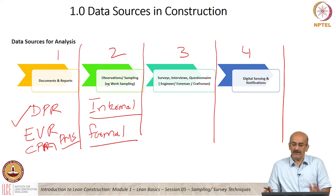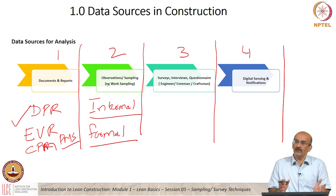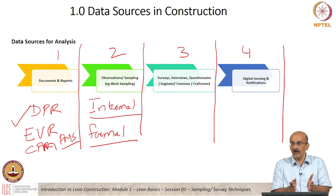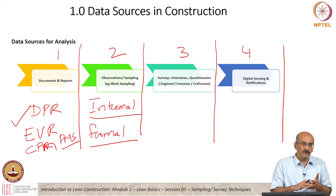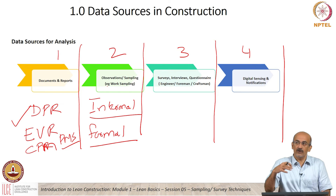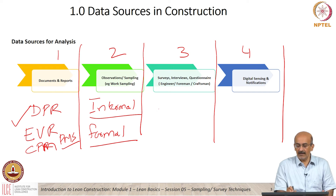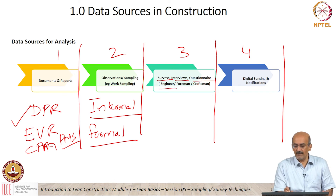Similarly, there are surveys, interviews, or questionnaires that are possible on site to get data. There is something called a foreman delay survey. Instead of going to a documented report or going by observation, I might go on to site, interview the site engineer, the foreman, or the workers, or do a questionnaire survey — which is more formally documented. From all this I get mostly second-hand information on what is happening. I can use surveys, interviews, or questionnaires with any people on the site to get data for analysis.